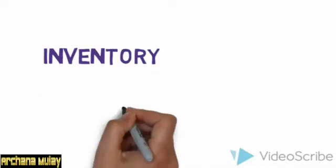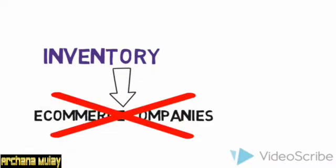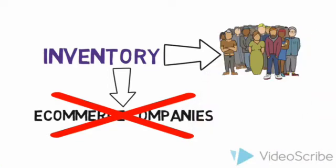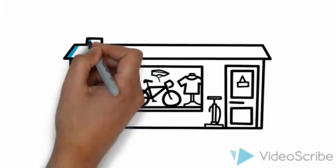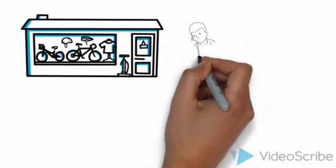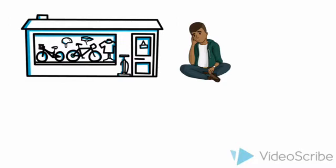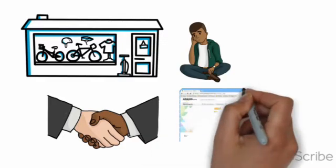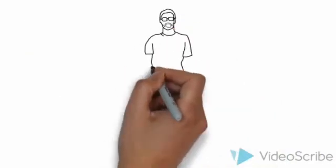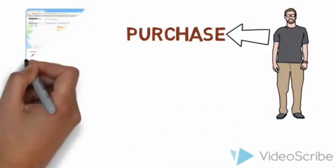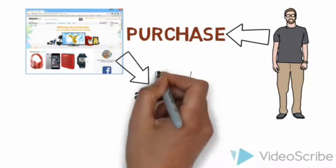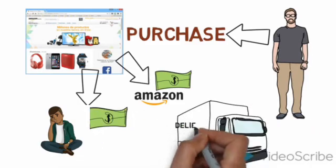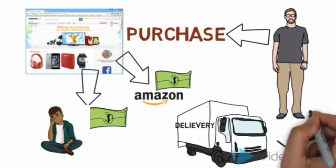These companies don't have their own inventories; the inventory is owned by those sellers who sell on these websites. For example, Raju has his own toy shop in Nagpur and could only sell toys in his local area. To increase his sales, he decides to tie up with Amazon and list his products on Amazon's website. Now, whenever a customer searches for toys on Amazon, they might find Raju's products. If they like them, they purchase through Amazon, and Amazon charges Raju a commission, giving him the remaining money.